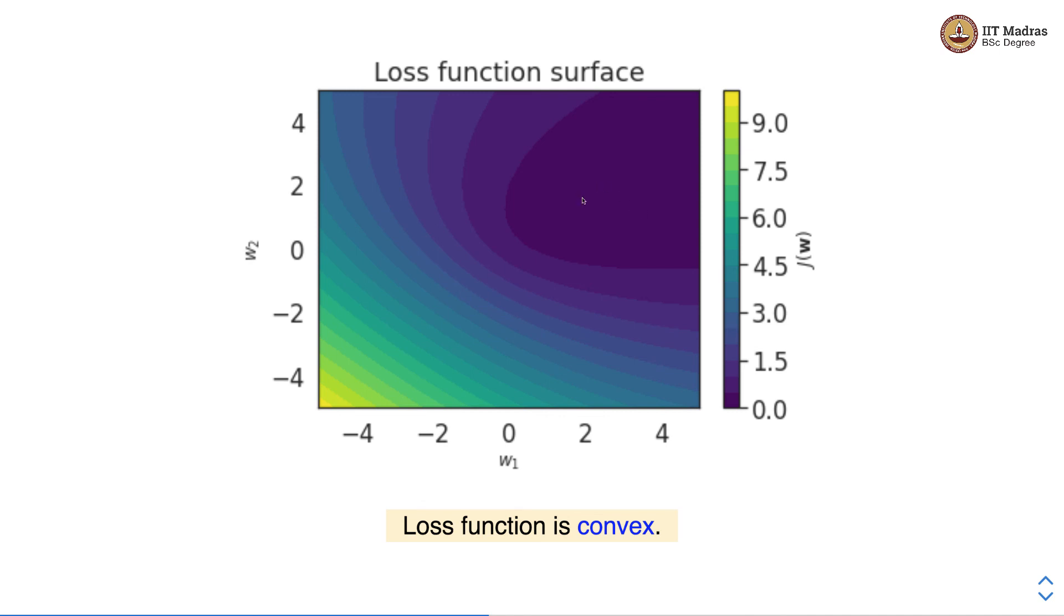The binary cross entropy loss function is a convex loss function and since it's a convex loss function it will have exactly a single global minima and it will be easier for us to optimize that loss function with something like gradient descent procedure.